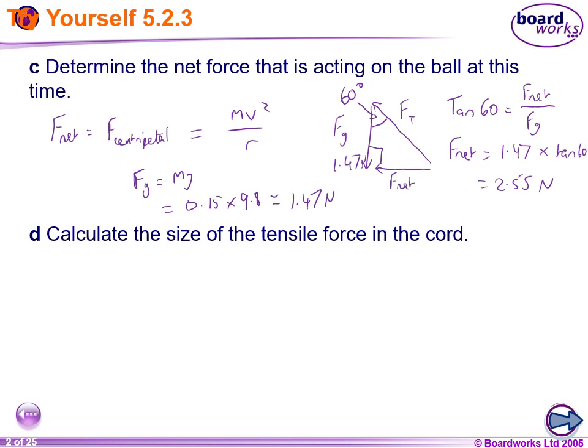All right. Now we want to calculate the size of the tensile force in the chord. Well, we can do this in a couple of ways. We can either use trig or we can use Pythag. We've got A and B, we can work out C if we want to. Let's do it that way. So our tension force squared is going to be equal to Fg squared plus Fnet squared, just from Pythagoras. So 1.47 squared plus 2.55 squared, square all of that to give us Ft.